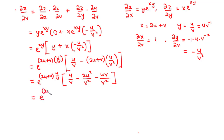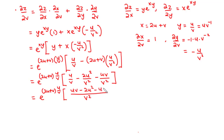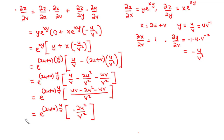We find the LCM which is v squared. So inside the brackets: v squared divided by v times u gives u·v, minus 2u squared, minus u·v. Simplifying: u·v minus u·v equals 0, leaving negative 2u squared over v squared. Therefore, the partial derivative of z with respect to v is e to the power (2u+v)(u/v) times negative 2u squared over v squared. That's it for today's video. Thanks for watching and see you in the next video.